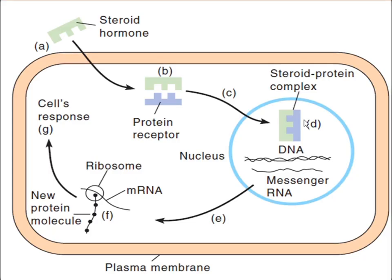Looking at the diagram: the steroid hormone enters the cell by crossing the plasma membrane because it is lipid soluble. It binds with protein receptors, and the steroid-protein complex moves into the nucleus. Transcription occurs — the double-stranded DNA converts to single-stranded mRNA. The mRNA leaves the nucleus, enters the cytoplasm, and translation occurs, forming a protein that mediates the cell response. This is how the mobile receptor mechanism works.